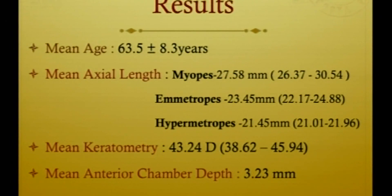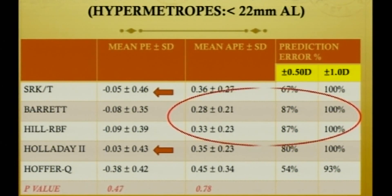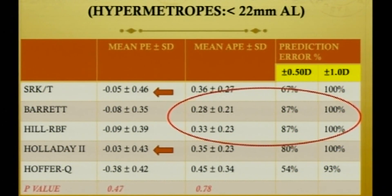Mean axial length for myopes was 27.58 mm, for emetropes it was 23.45 mm, and for hypermetropes it was 21.45 mm. In hypermetropes, SRKT and Holaday II showed the least prediction error. Barrett and Hill RBF gave the least absolute prediction error values. 87% of eyes in both the Barrett and Hill RBF groups were within the plus/minus 0.5 diopters range.